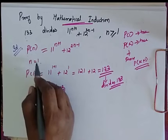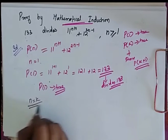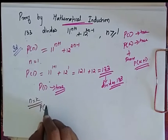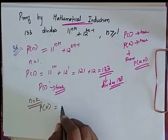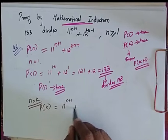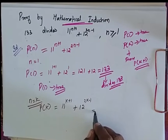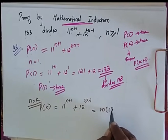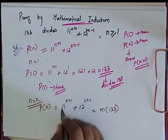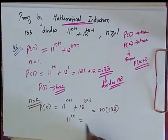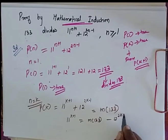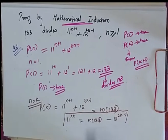Since n = 1 is true, we assume that n = k is also true. So P(k) = 11^(k+1) + 12^(2k-1) = 133m for some integer m. Therefore, 11^(k+1) = 133m − 12^(2k-1). We will use this result for further proof.